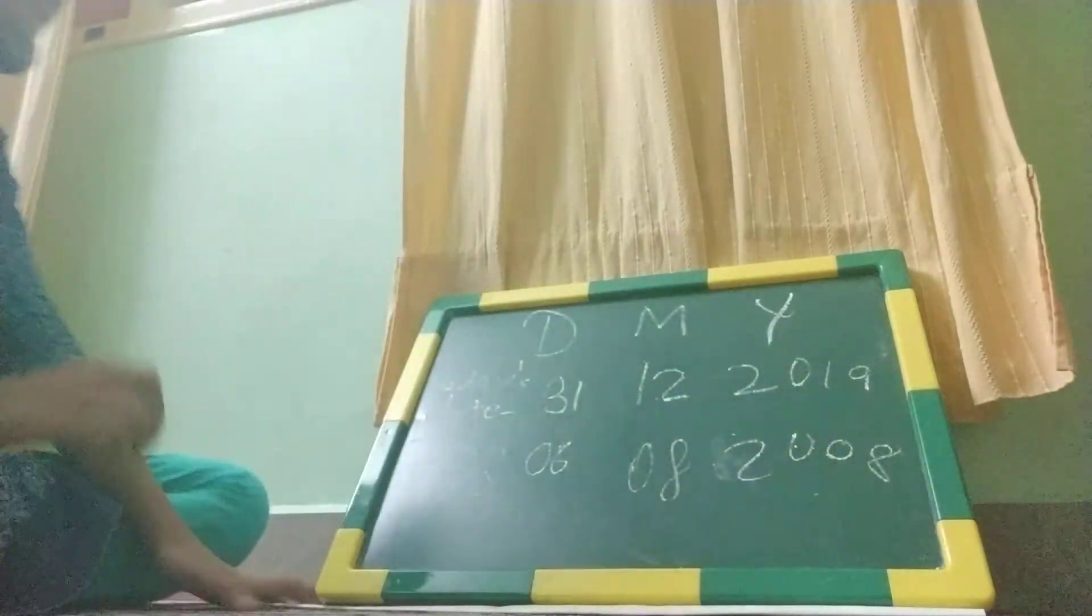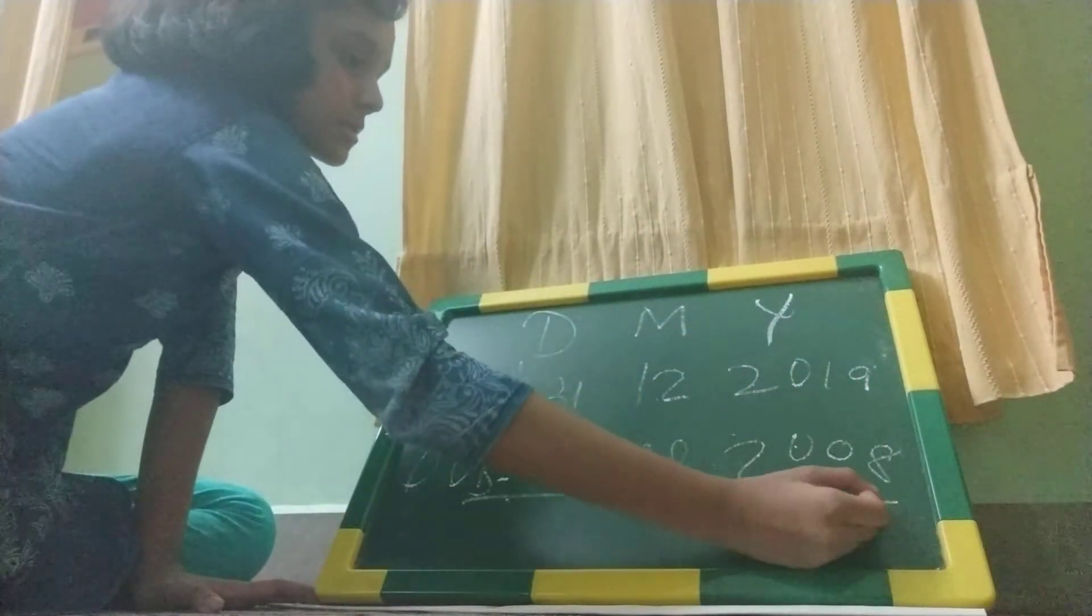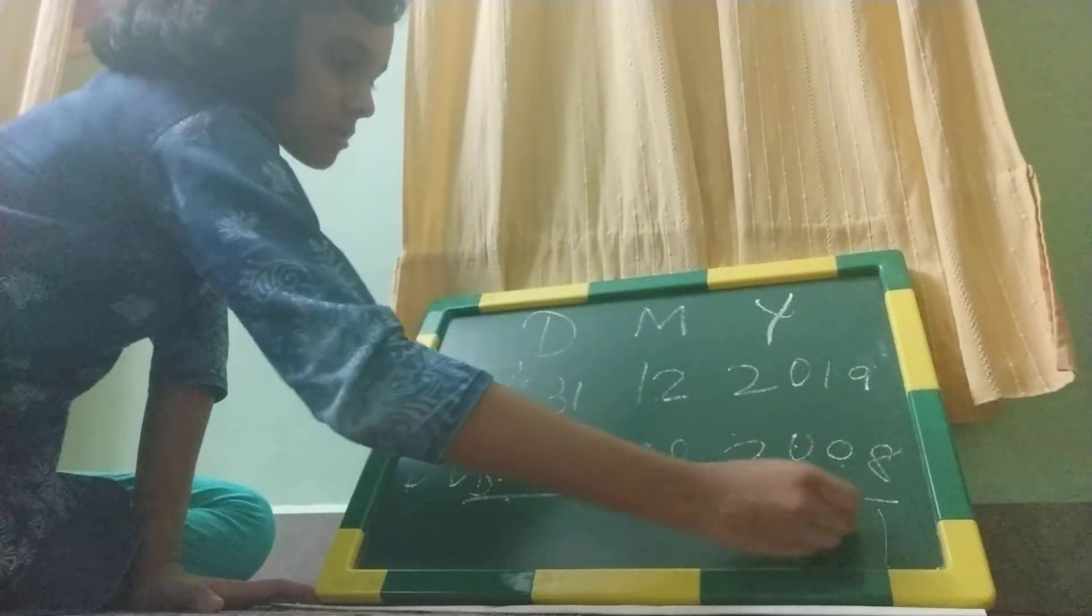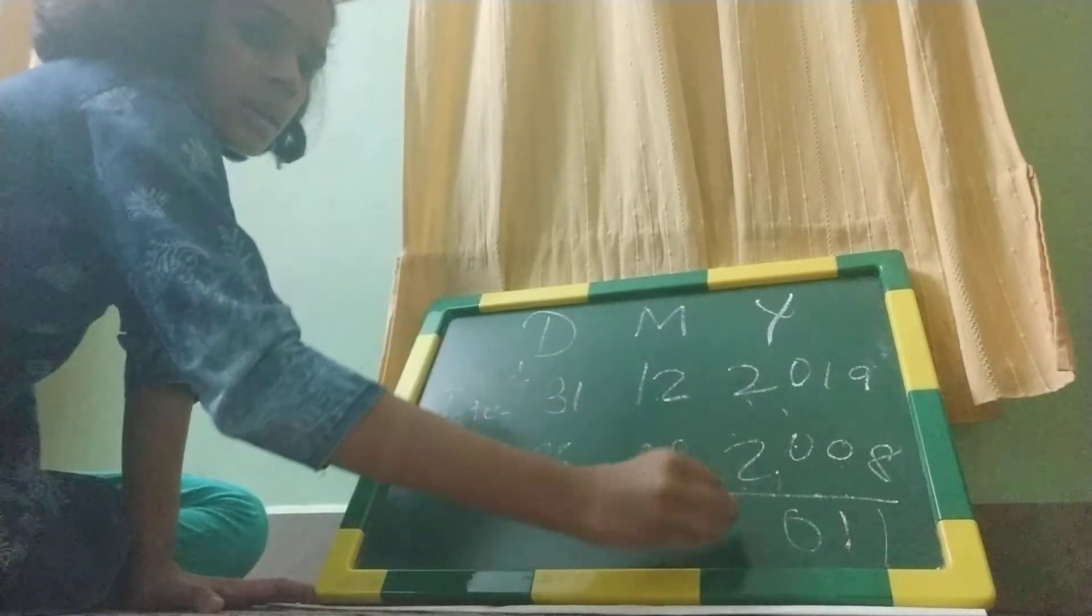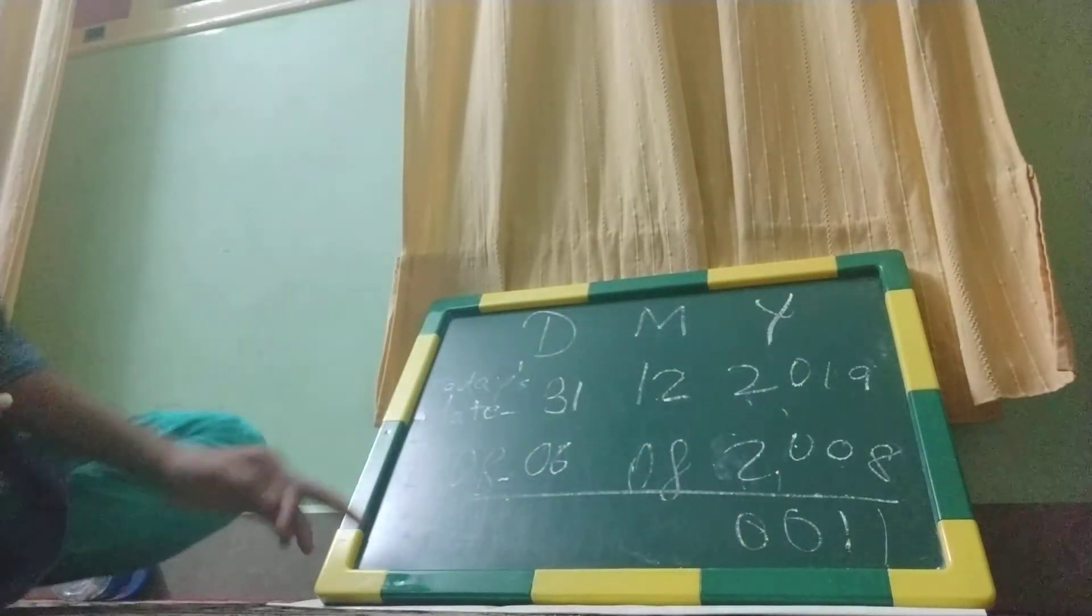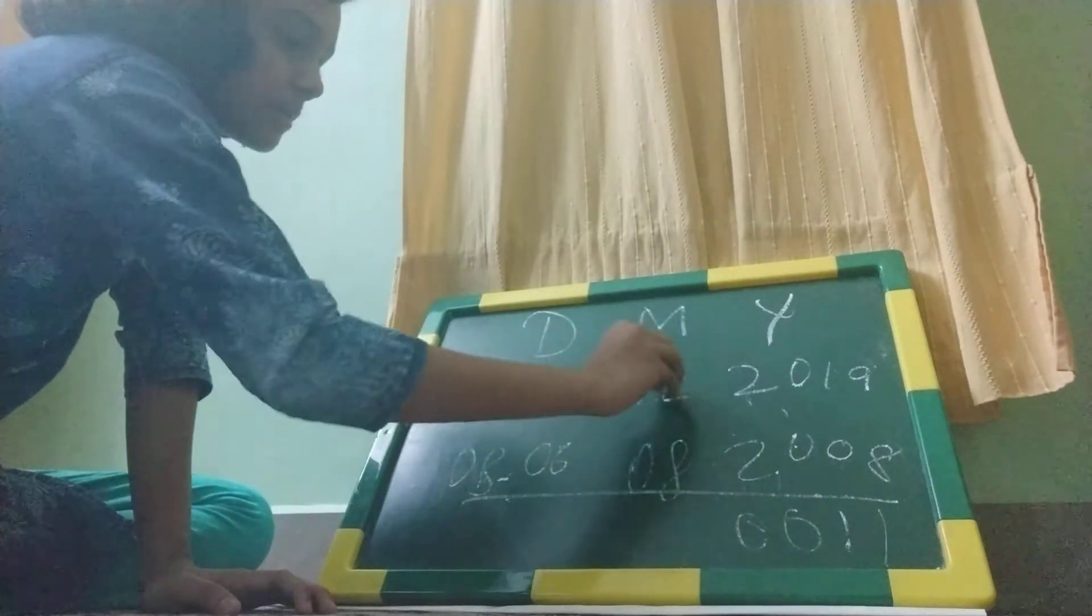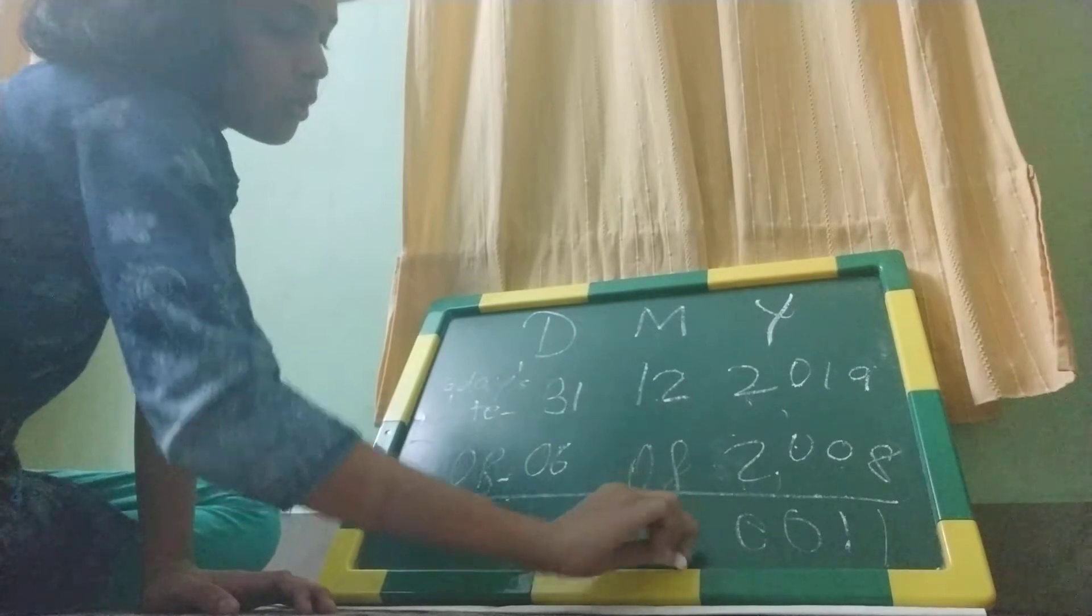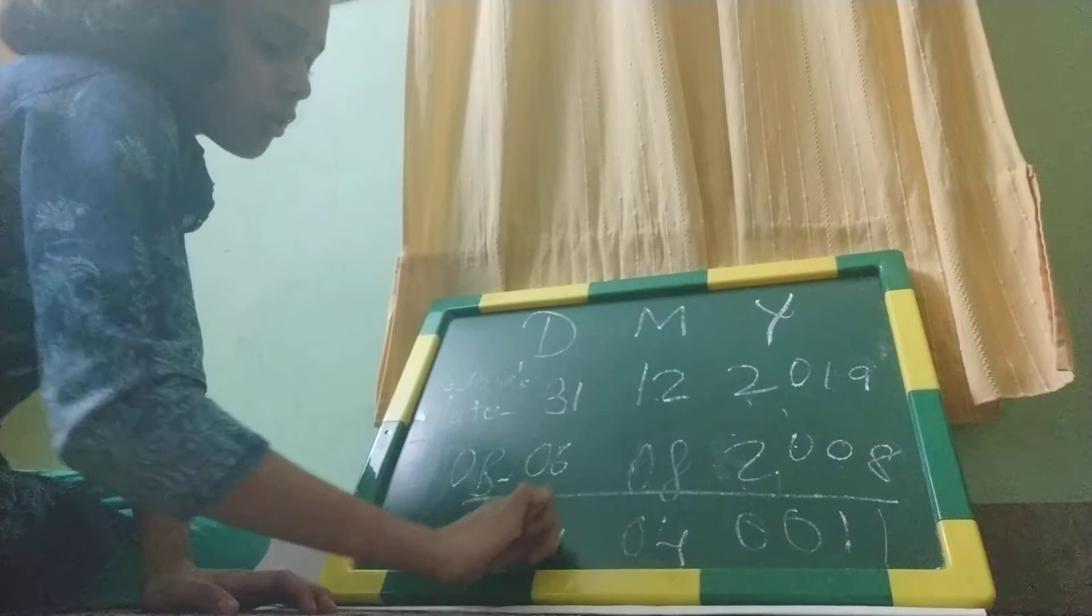So we will minus these numbers. See, 9 minus 8 equals 1, 1 minus 0 equals 1, 0 minus 0 equals 0, and 2 minus 2 equals 0. So my age is 11 years. Here we can see 12 minus 8 equals 4, so 4 months. And 31 minus 6 equals 24.